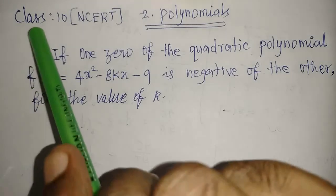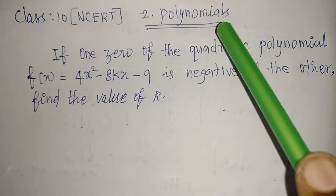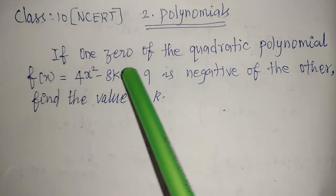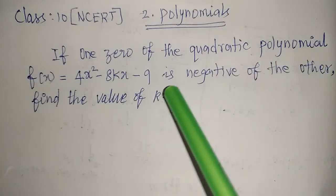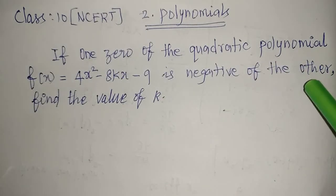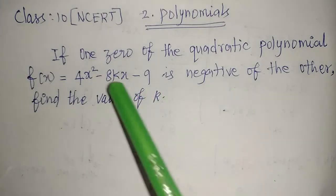Welcome to the channel. Today we will see Class 10 NCERT Chapter Number 2: Polynomials. Question: If one zero of the quadratic polynomial is negative of the other, we have a quadratic, which means we have two zeros.